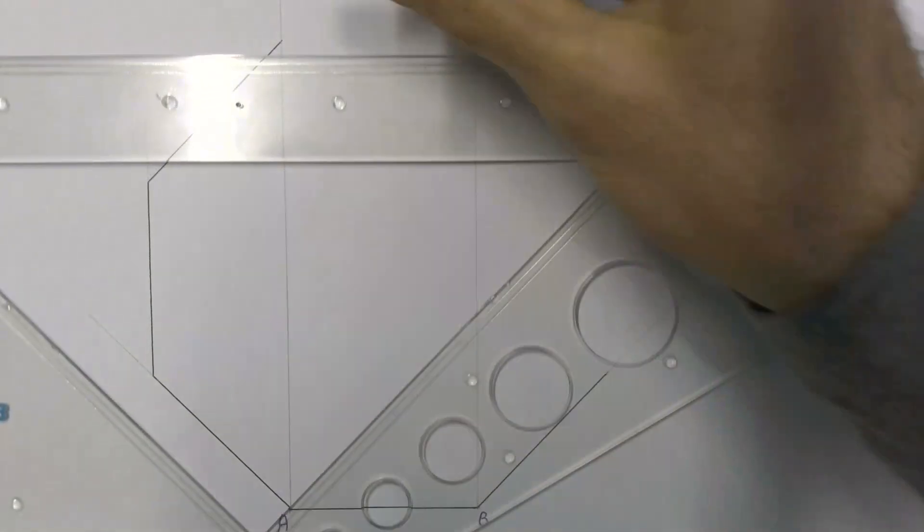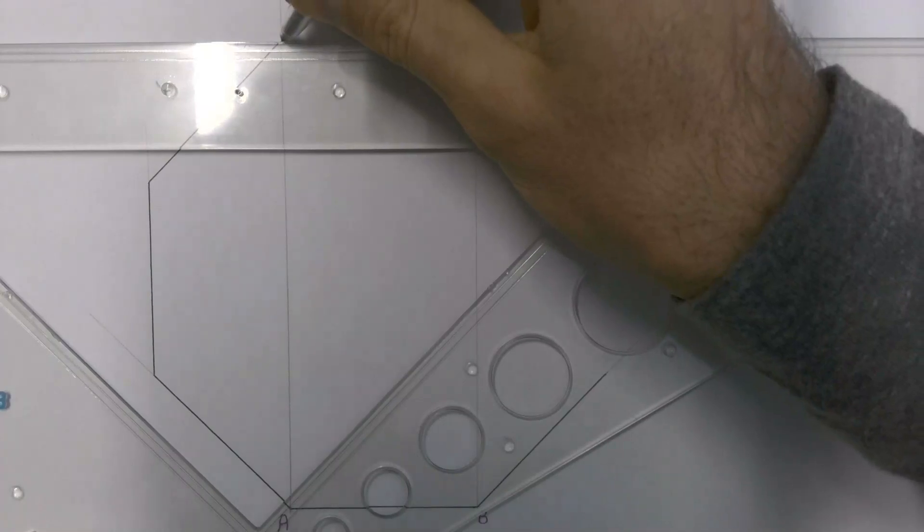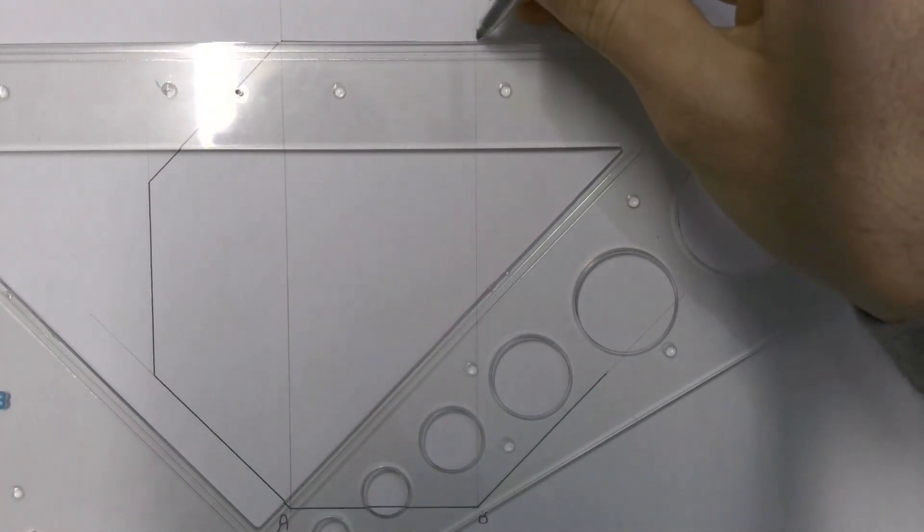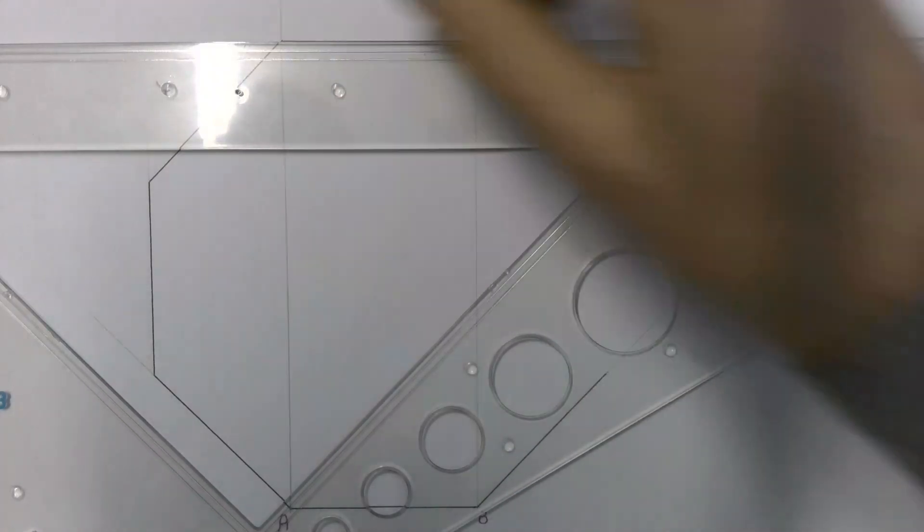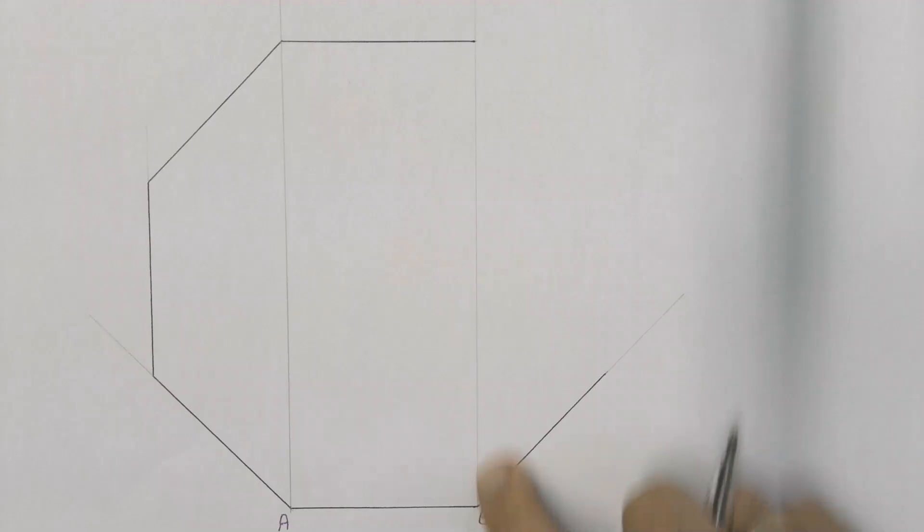Then to finish off our octagon, we can draw a straight line across from that point till where it hits into our other construction line that we drew up from point B.